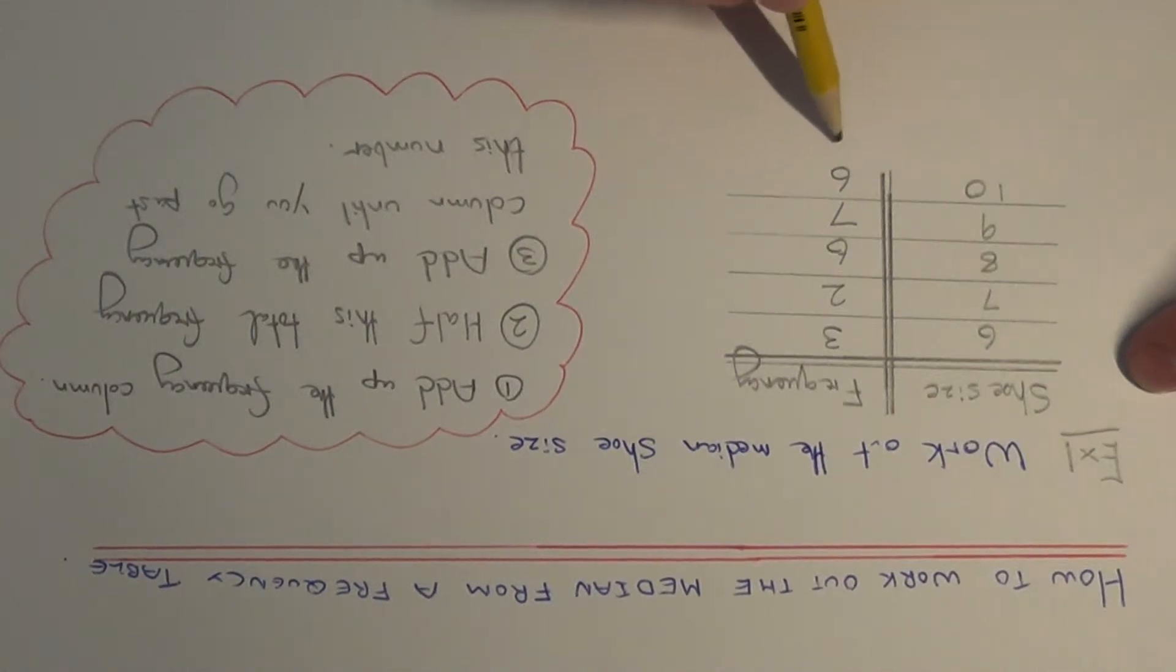So first of all then, add up the total frequency. So 3 add 2 is 5, add 6 is 11, add 7 is 18, add 6 is 24.